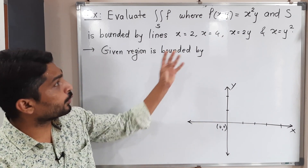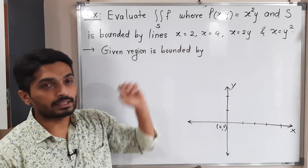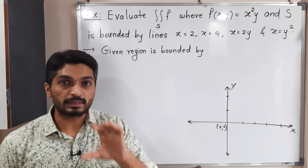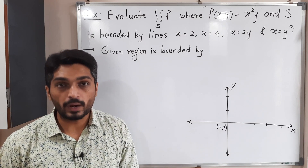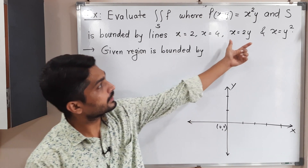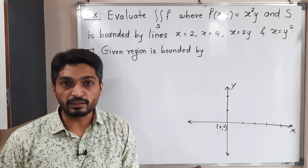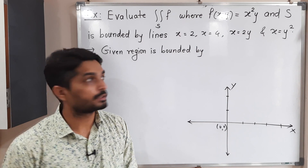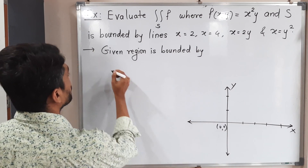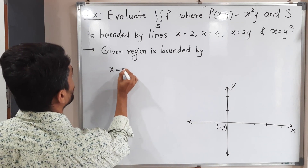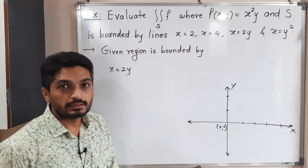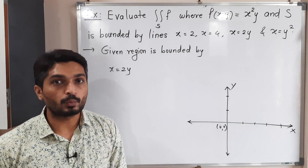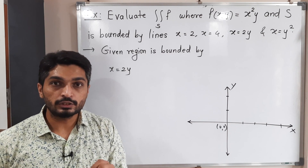So we have four curves. The first two are x is equal to 2 and x is equal to 4. These two equations represent lines which are parallel to the y-axis. The remaining two curves are a little bit difficult, so we will consider those two curves first.